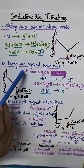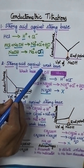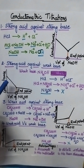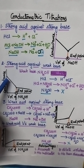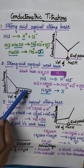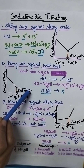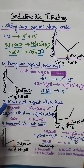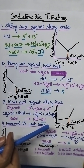Moving to strong acid against weak base — initially the conductance of strong acid is high. On the addition of weak base, the conductance slowly decreases. After reaching the end point, there is no change in the conductance.